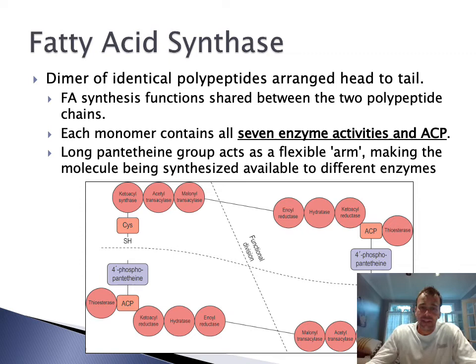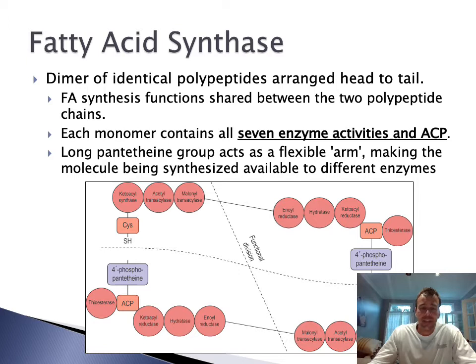Fatty acid synthase is a dimer of identical polypeptides arranged head to tail — shown here with one monomer and the other monomer in a head-to-tail arrangement. The fatty acid synthesis functions are shared between these two polypeptide chains, and each monomer contains all seven enzyme activities as well as acyl carrier protein. You also have a long pantothene group that acts as a flexible arm making the molecule being synthesized available to the different enzymes — it can swing around and present substrates to the various enzymes.